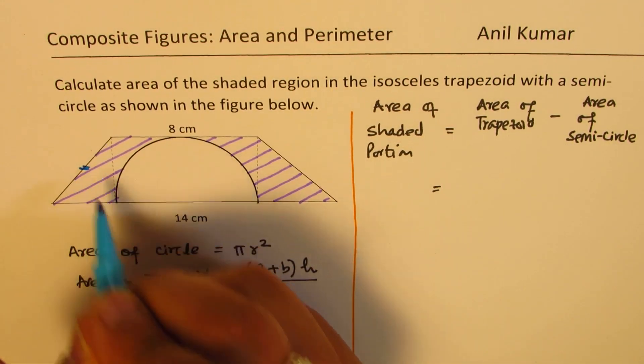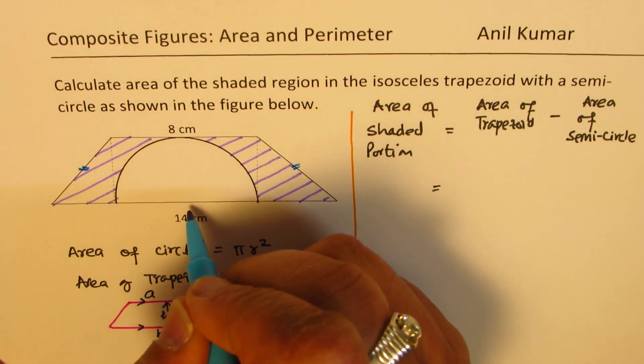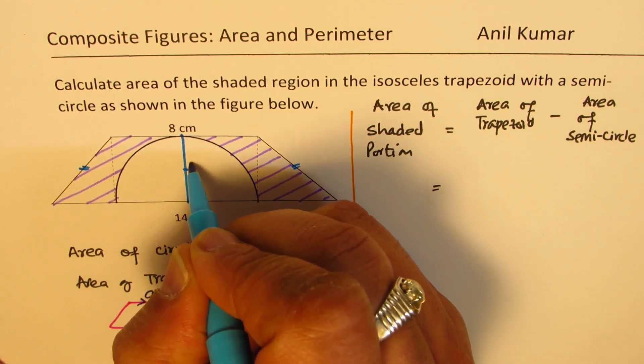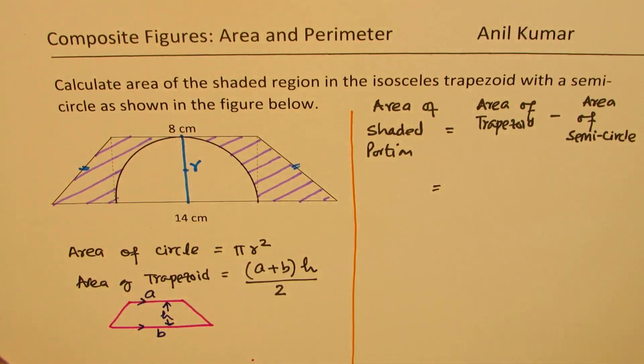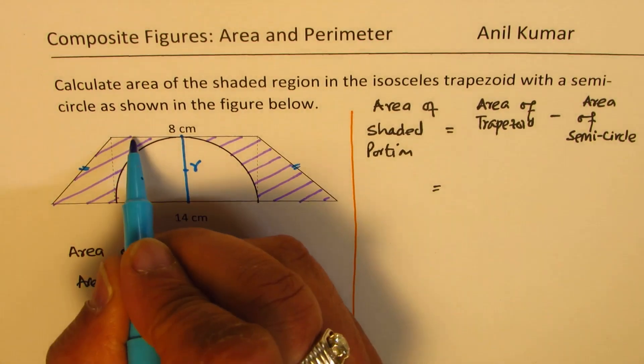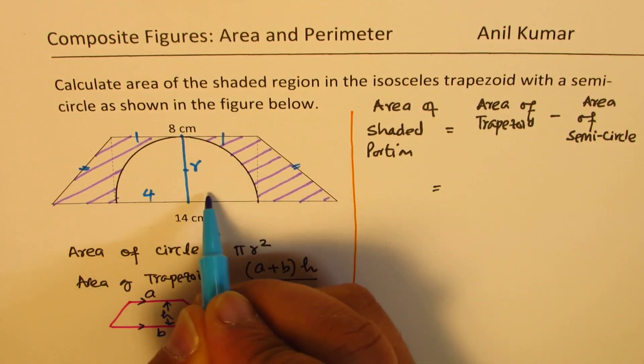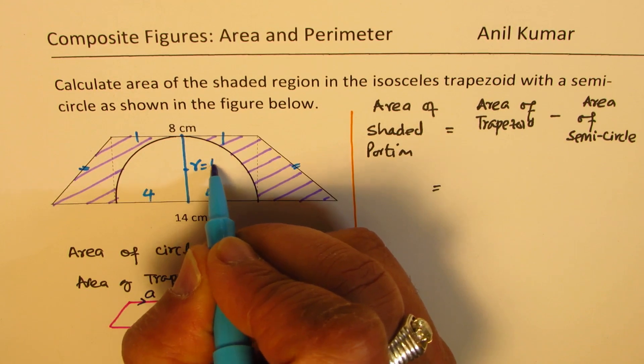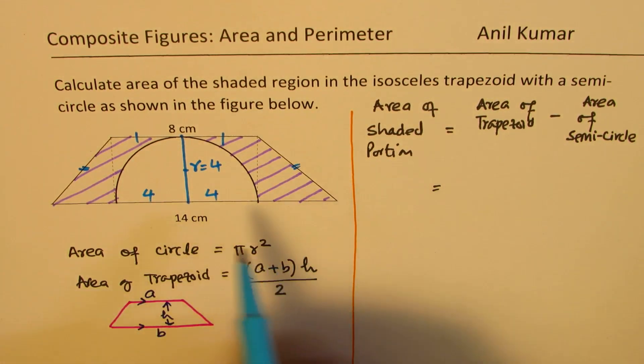So since this is isosceles, these two sides are equal. So there is symmetry in this, right? So that could be the radius of this circle. We are given 8 centimeters, so these two sides are equal. That means this is 4, and that is also 4. That means the radius is equal to 4.